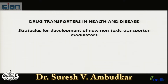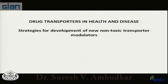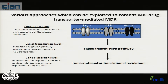We'll continue with the topic today. We'll discuss strategies for development of new non-toxic transporter modulators. If you're looking at transporters, how could you develop modulators? There are three levels. One is the cell surface level, where you look at the function of these transporters. The most important ones we know of as of now: you look for high affinity inhibition of function of transporters at the plasma membrane.